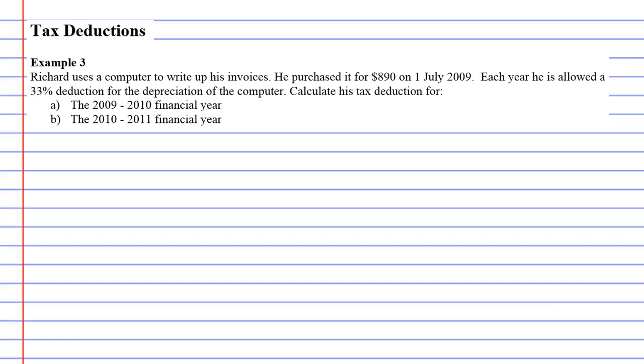Tax deductions example 3. Richard uses a computer to write up his invoices and he purchased this computer for $890 on the 1st of July 2009. This means he's allowed to claim this as a tax deduction because it's a work-related computer. Now quite often you can't claim the full amount, so you can't actually claim $890.